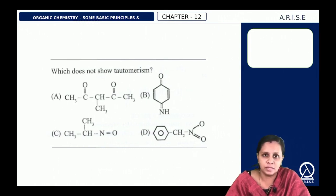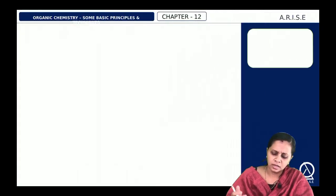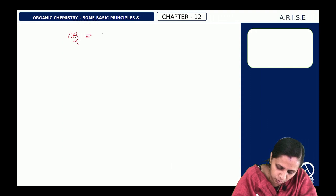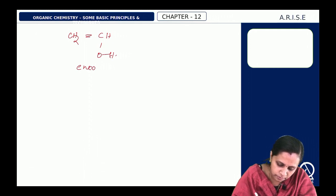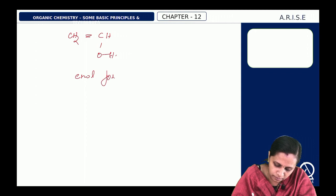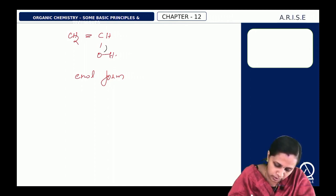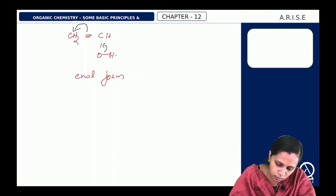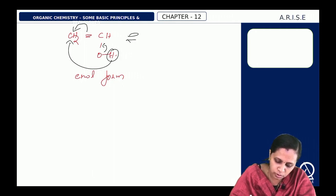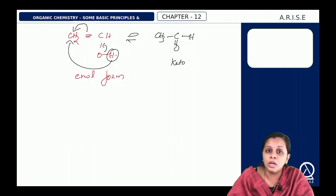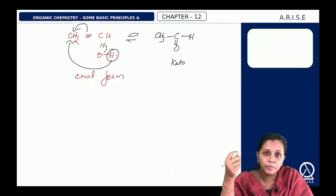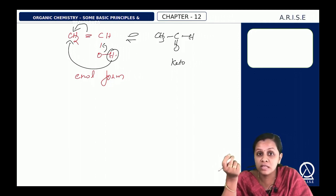Next question: which does not show tautomerism? Tautomerism can be understood with an example: CH2=CH–OH (enol form). The OH electrons shift, forming C=O, and the pi electrons shift so hydrogen moves to the adjacent carbon, giving CH3–C=O (keto form). This is keto-enol tautomerism. For tautomerism to occur, it must end in a stable alkene (enol form).